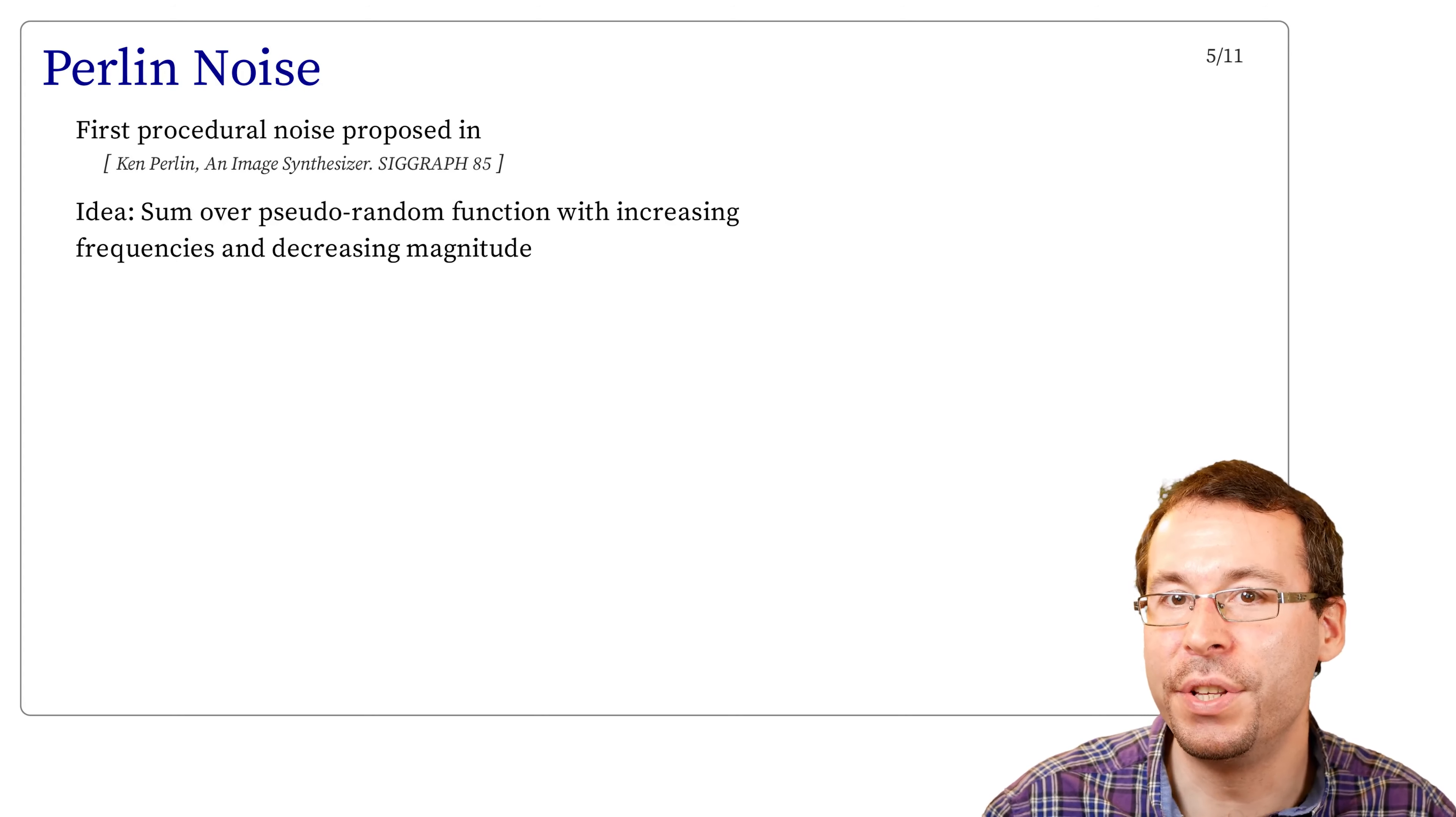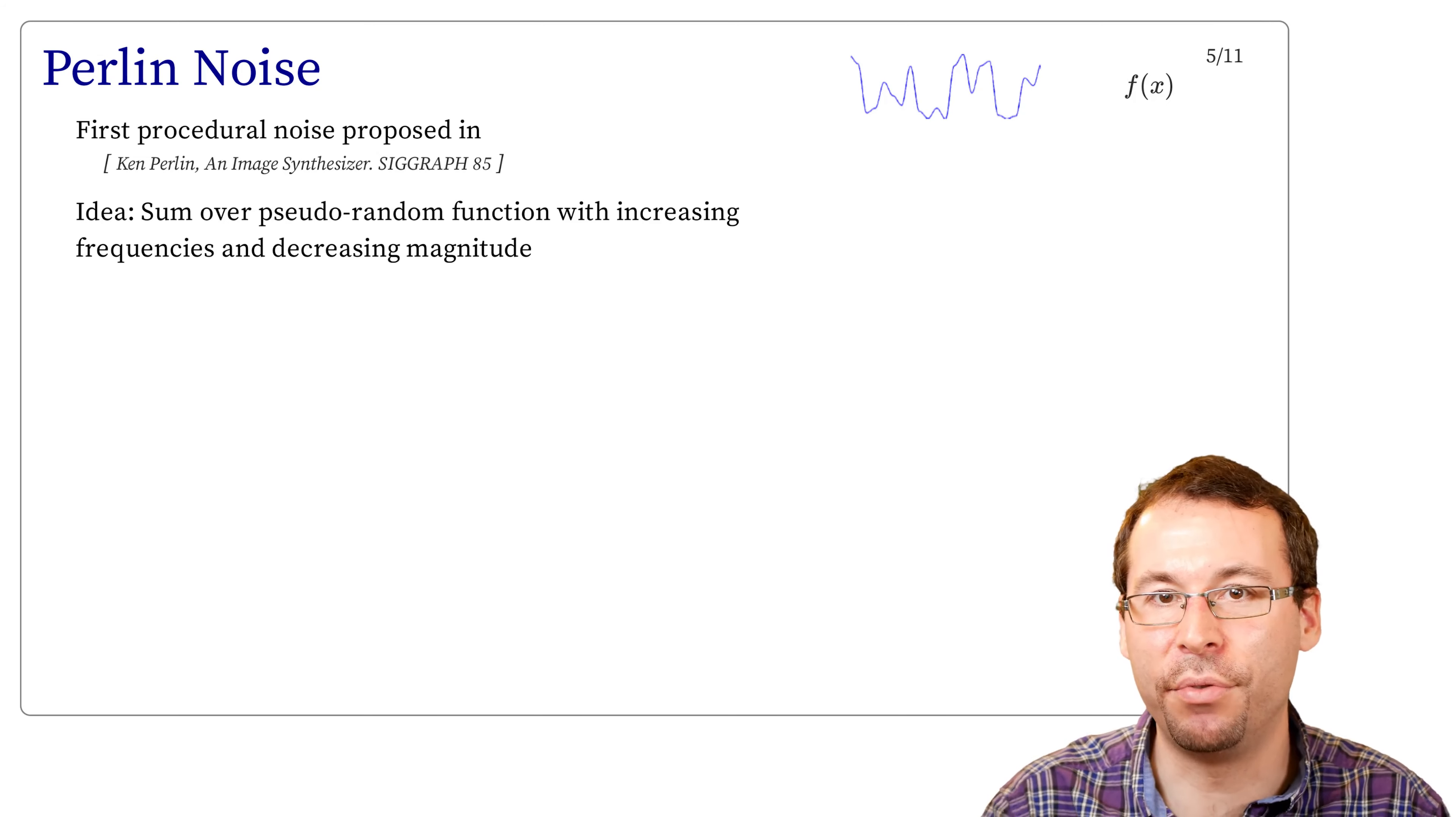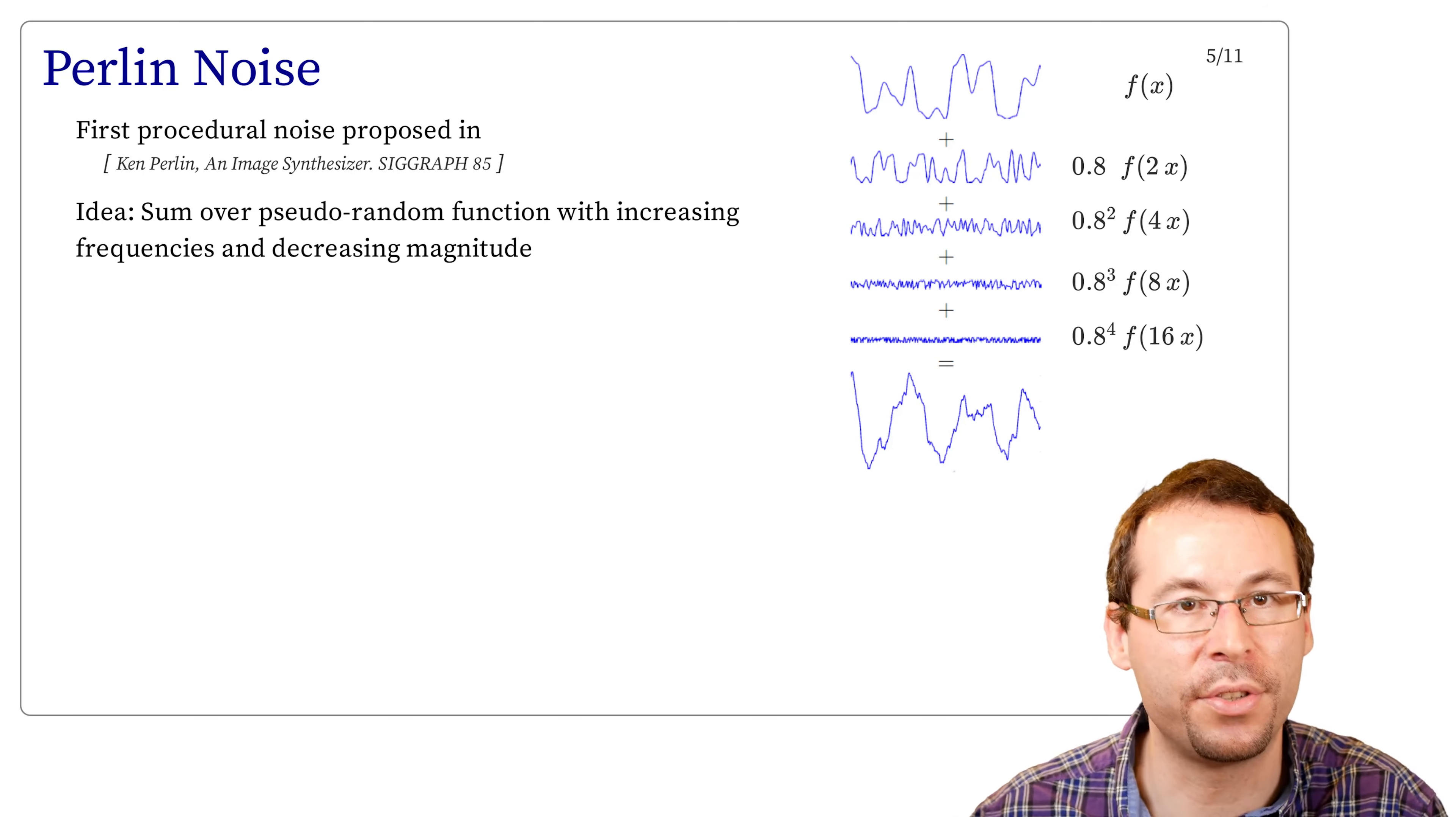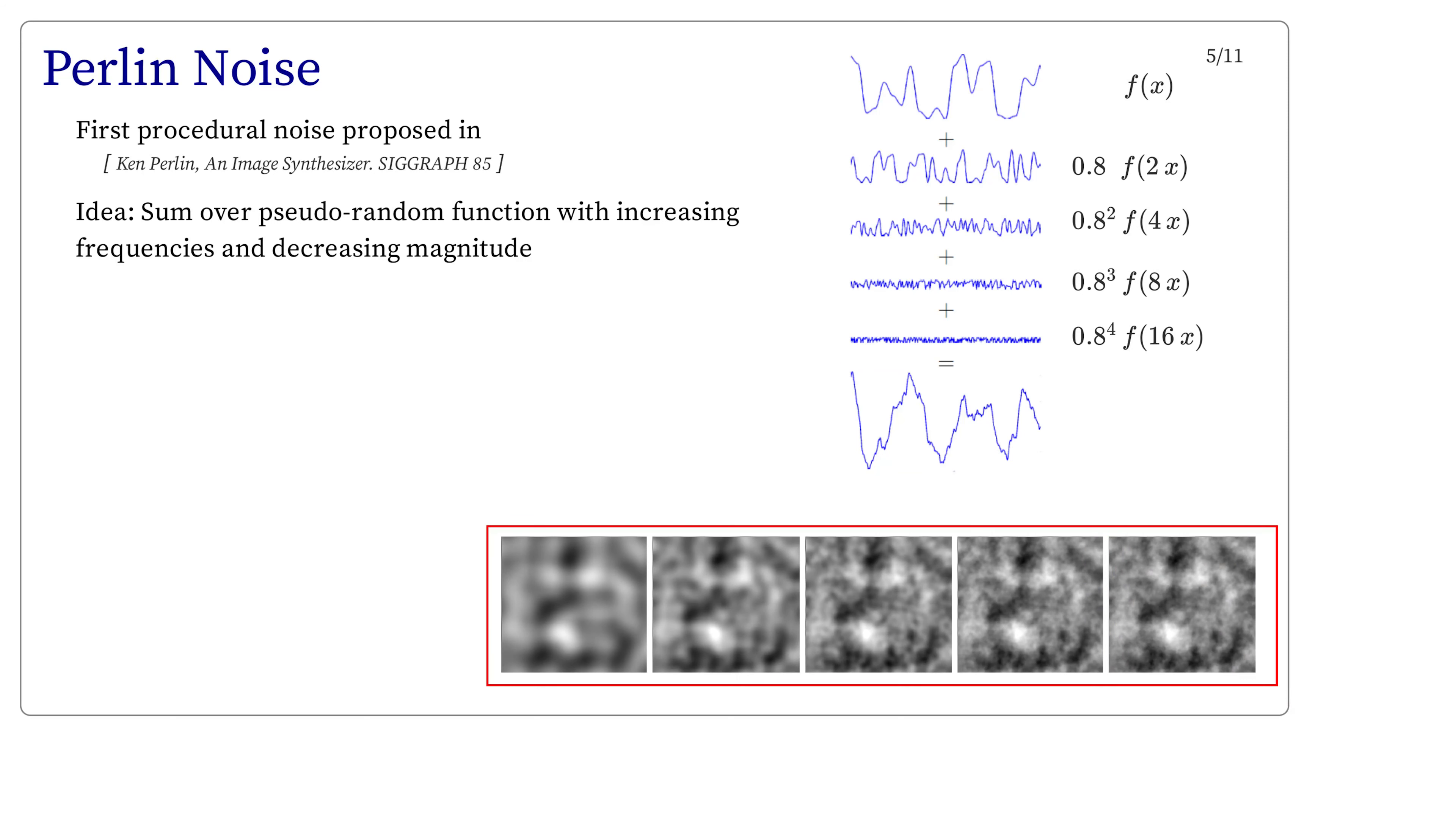So the initial idea of Perlin noise, that has been proposed by Ken Perlin in 1985, is to sum over the pseudo-random function that we defined previously with increasing frequencies and decreasing magnitude. So as an example, we can start with f, then we sum it to 0.8 times f(2x), itself sum to 0.8 squared times f(4x), and so on. At each step, the frequency of the function increases, but the magnitude of the details decreases. And at the end, we can see the appearance of this function after a few summations in 1D, and in 2D, as a texture.